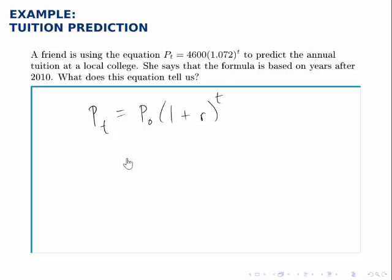Matching up the pieces, it's clear that the initial value is 4,600, and what's in parentheses, 1 plus r equals 1.072, so r must be 0.072, or 7.2%.